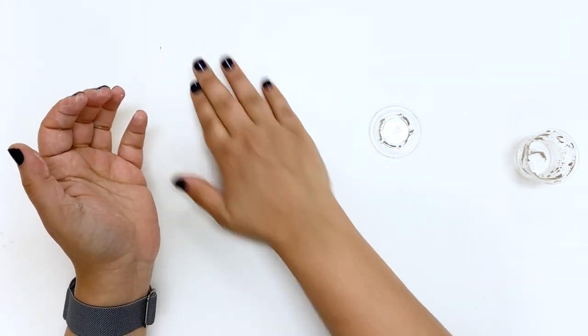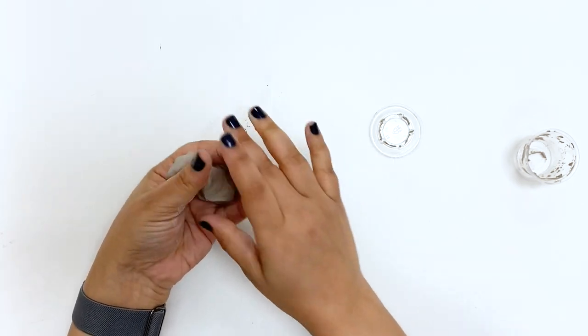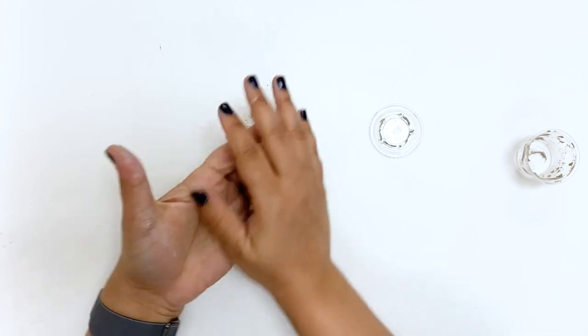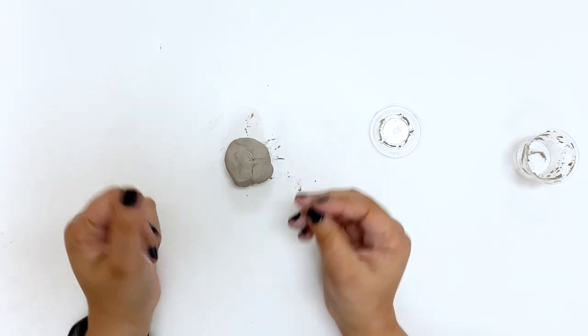If you over-knead it, then it won't stick to itself, which is why we say just gently knead. It should be malleable or workable in your hands with as few air bubbles inside as possible.